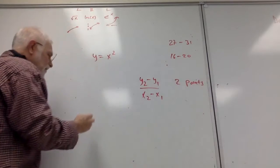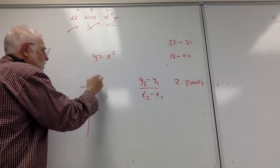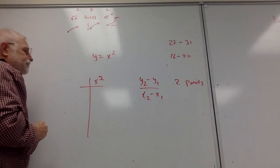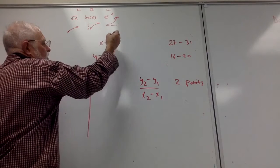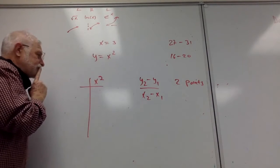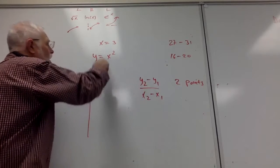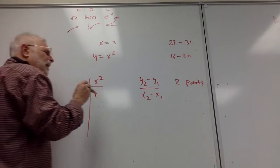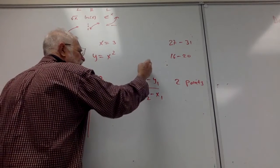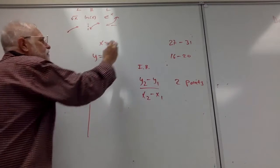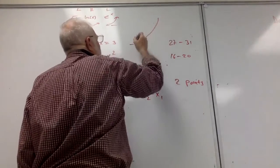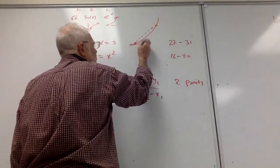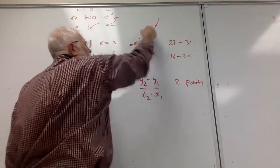I'll make a table of values here. I'll use x equals 3 — that gets me nine. This is about instantaneous rate of change. And I know if I have two points, that doesn't really give me the slope of the tangent, because that's an average rate of change.